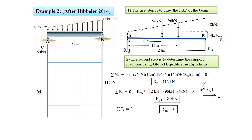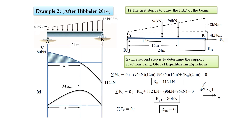Since w(x) is linear, V(x) must be parabolic. In order to draw the moment diagram, we need to know where the shear force is zero along the beam's axis. According to the diagram, it is zero at X meters from point A, so we need to find X. Since the point of maximum moment occurs when dM/dx = V = 0, and from the sequence of curving, the moment diagram must be cubic — starting from zero at point A, going to zero at point B, and reaching its maximum at distance X from point A.